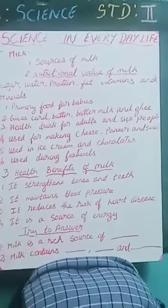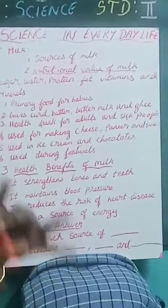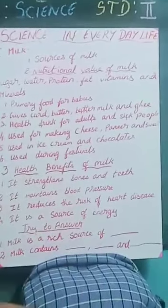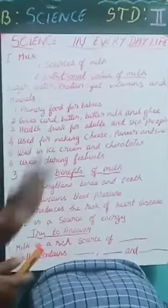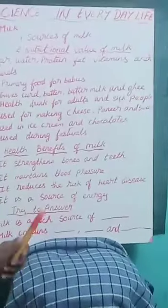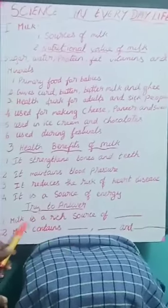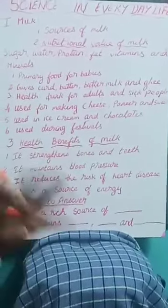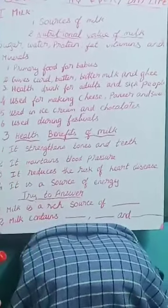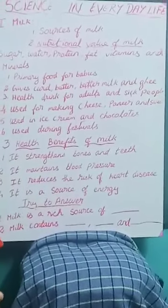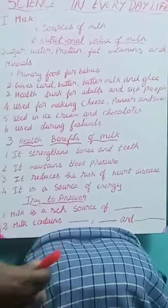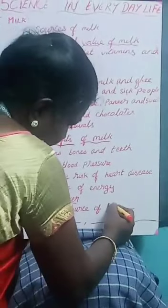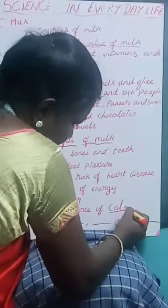So, what is milk? What are the sources of milk? What are the benefits and nutritional values of milk? I explained about milk. Try to answer these two questions. Milk is a rich source of — what is present in milk? Rich source of calcium. Yes, it is good for your bones. What is the spelling for calcium? C-A-L-C-I-U-M. Calcium. Good.